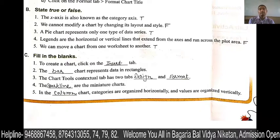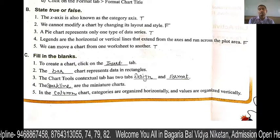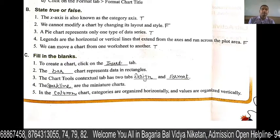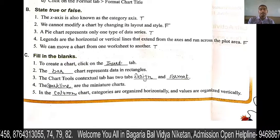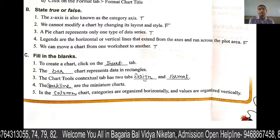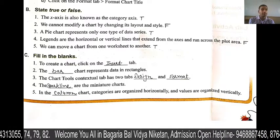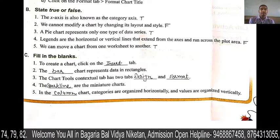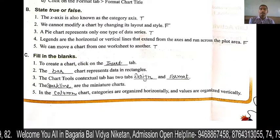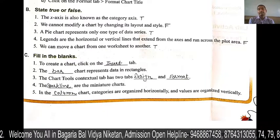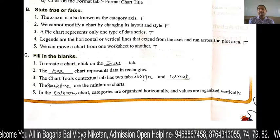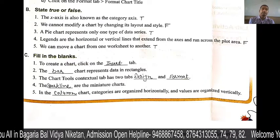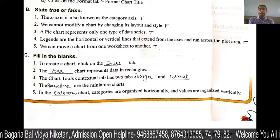Next is: what are the miniature charts? They are called sparklines. Next is: in the chart, the categories are organized horizontally and the values are organized vertically, so the values are vertical.